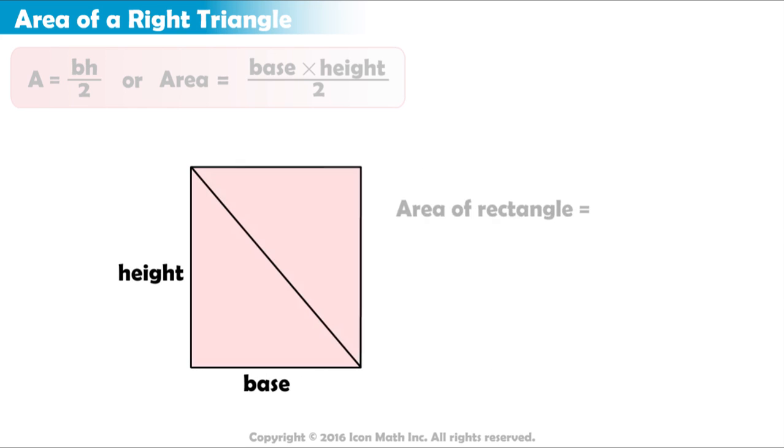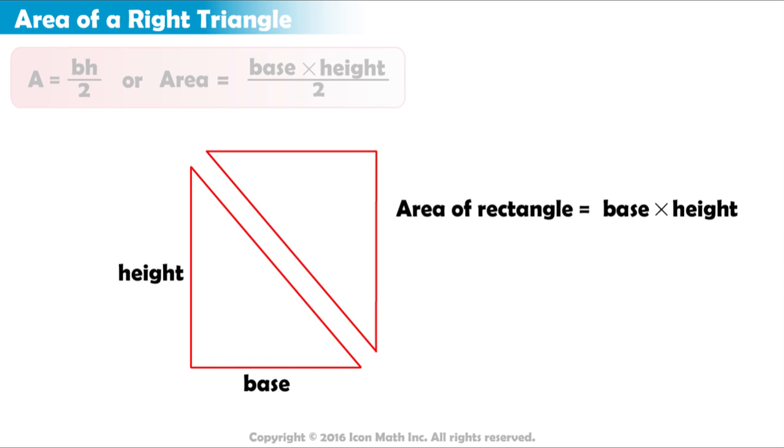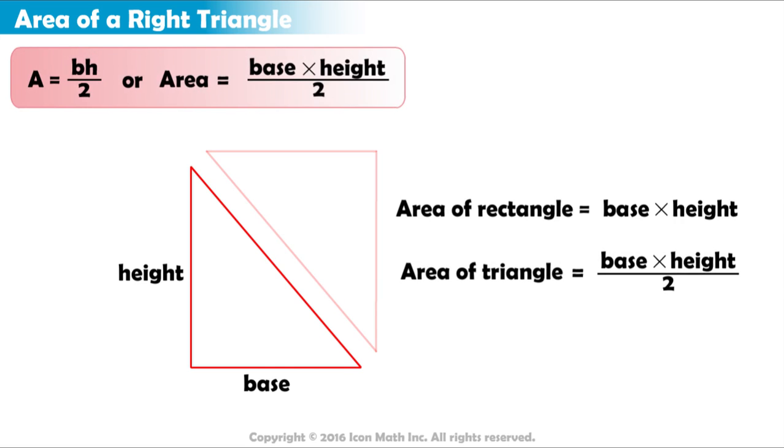The formula for the area of a rectangle is length or base times height. Since one-half of this rectangle is the original triangle, then one-half of the area of the rectangle equals the area of the triangle.